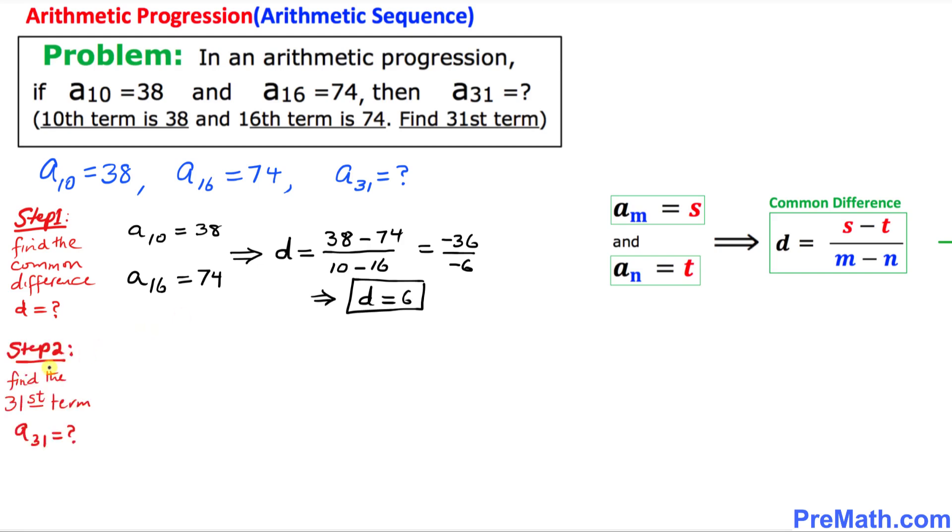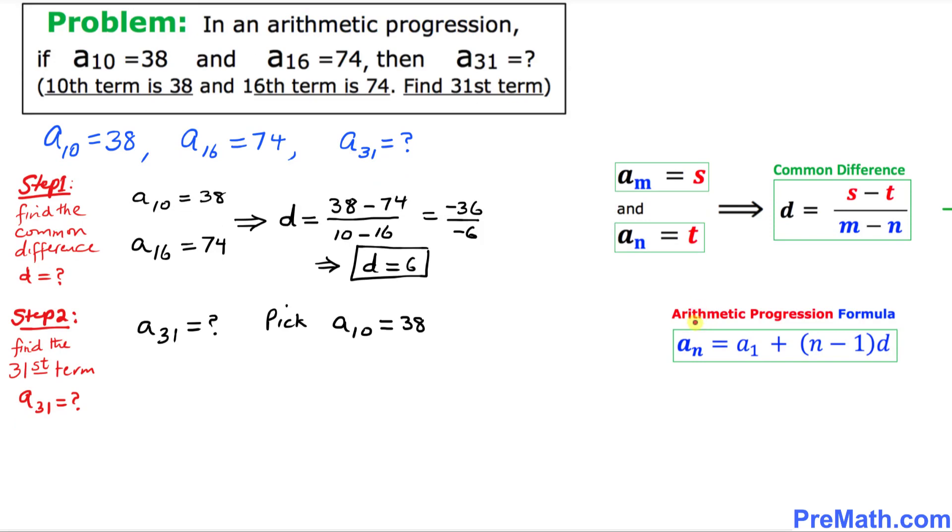And in this step number two we are going to find the 31st term, that means a sub 31 equals how much. So that means a sub 31 we don't know, and among these two between these two given values over here we are going to pick the simpler or easiest one and the easier one is a sub 10, so I am going to pick a of 10 equals 38. And here let's recall our arithmetic progression formula.